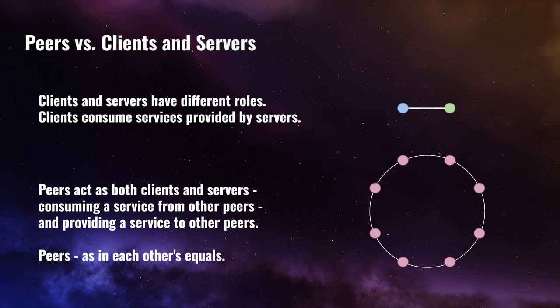The main difference between peer-to-peer topology and client-server topology is that clients and servers have different roles. Clients consume services provided by the servers. Peers, on the other hand, act as both clients and servers — consuming a service from other peers and providing a service to other peers. The peers are said to be each other's equals, and that is where the term peer comes from. The nodes in a peer-to-peer network are each other's peers, each other's equals.